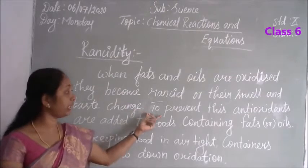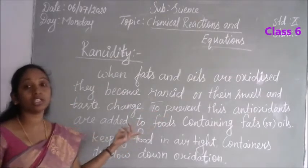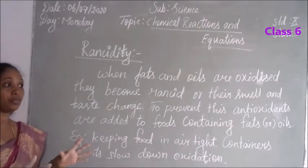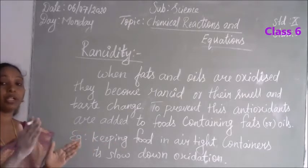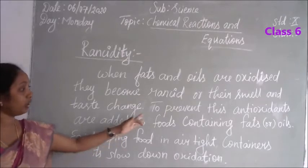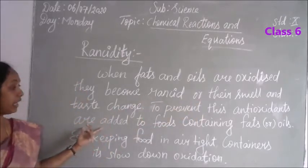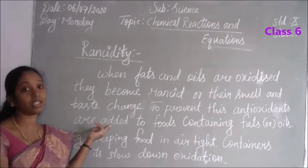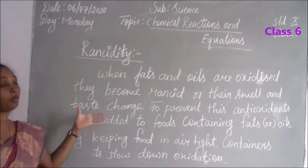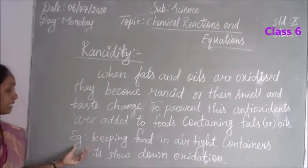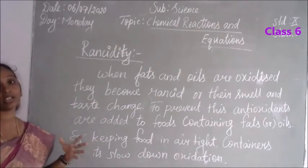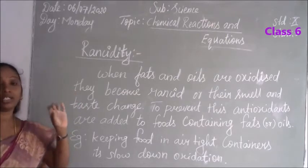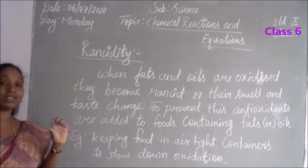How to prevent rancidity? We have to add antioxidants. Antioxidants are substances that prevent oxygen from entering the food. We add antioxidants to food containers or oil items inside containers — then the food definitely will not be spoiled and will not become rancid.